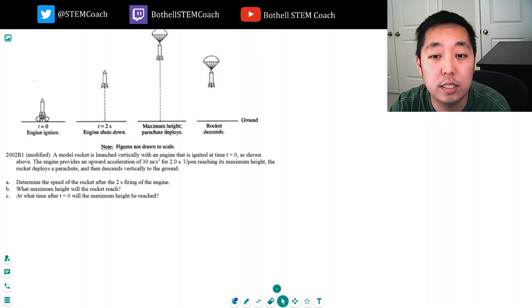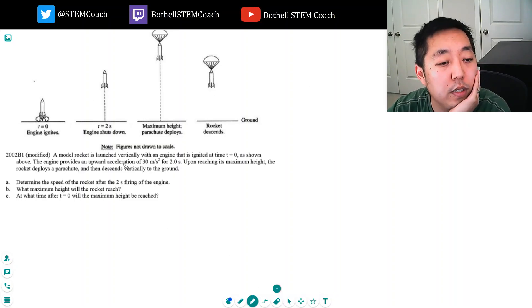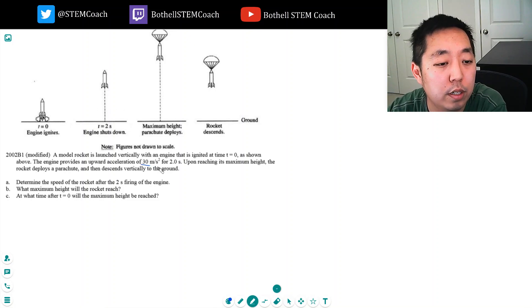So this is a kinematics question that we're going to be working on here. Let's take a look. A model rocket is launched vertically with an engine that is ignited at time t equals zero shown above. The engine provides an upward acceleration of 30 meters per second squared for two seconds. Upon reaching its maximum height the rocket deploys a parachute and descends vertically to the ground. Determine the speed of the rocket after two seconds of firing the engine.